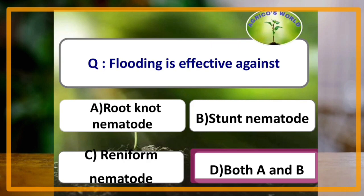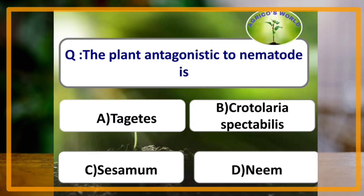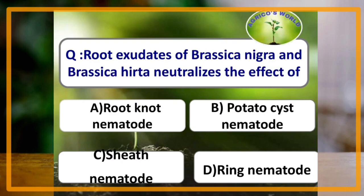Flooding is effective to control both root knot nematode and stunt nematode. The plant antagonistic to nematodes is Crotalaria spectabilis. Root exudates of Brassica nigra and Brassica hirta neutralize the effect of potato cyst nematode.